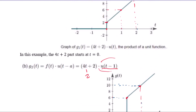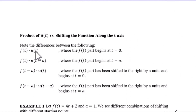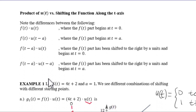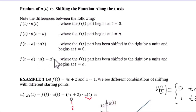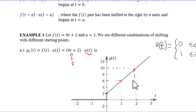In summary, we have four cases of the product of f(t) and u(t). Case 1: no shifting, both start at 0. Case 2: f(t)·u(t-a) - starting point shifted to the right by a units. Case 3: f(t-a)·u(t) - function shifted to the right by a units, starting at 0. Case 4: f(t-a)·u(t-a) - both starting point and function shifted to the right by a units. The amount of shifting depends on a.